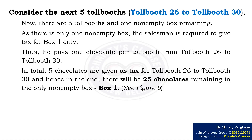Consider the next 5 tollbooths, that is tollbooth 26 to tollbooth 30. There are 5 tollbooths and 1 non-empty box remaining. As there is only one non-empty box, the salesman is required to give toll for box 1 alone. Thus, he pays 1 chocolate per tollbooth from tollbooth 26 to tollbooth 30 — in total, 5 chocolates are given as toll. Hence, in the end, there will be 25 chocolates remaining in the only non-empty box, that is box 1, as shown in the figure.